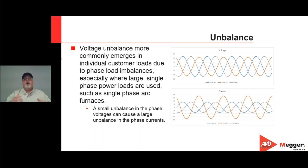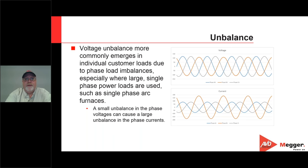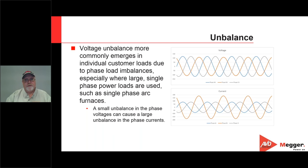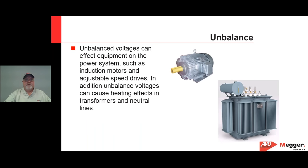Unbalance can occur from voltage differences or shifts in phase angle. In the past we used the ANSI system, averaging all three phases and finding which one deviated the farthest — but this is only an approximation. Today, we use phase sequence components to measure unbalance, looking at the magnetic rotation: comparing the ABC versus CBA rotation. We shift phase B by 120 degrees and phase C by 240 degrees and add them together to get our positive sequence component.